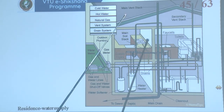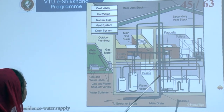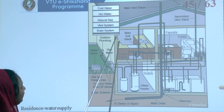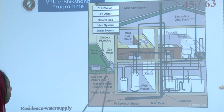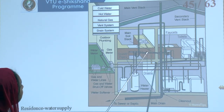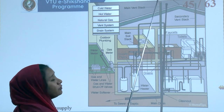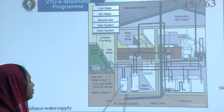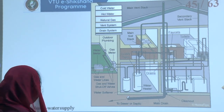An internal residence diagram shows that five pipelines operate in any building: cold water, hot water, natural gas, vent system, and drain system. A water meter connected to the outdoor plumbing system feeds all supply pipelines. Supply pipelines connect to a vent stack, with all vents connecting to the main drain. The system connects to faucets, toilets, and all utilitarian spaces.